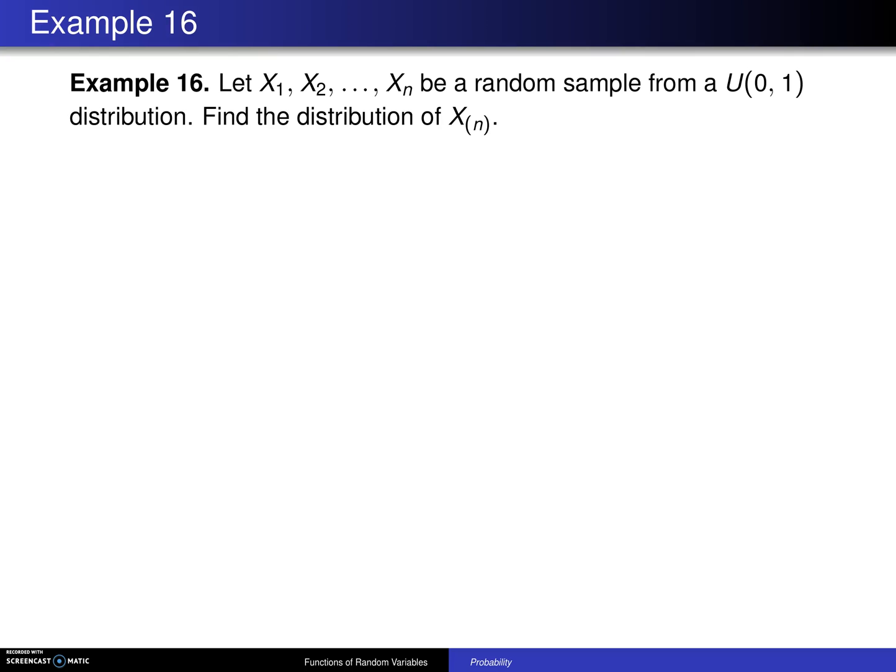Let x1 up to xn be a random sample, this time from a uniform 0,1 population. Find the distribution of the largest of the values, that is the nth order statistic.